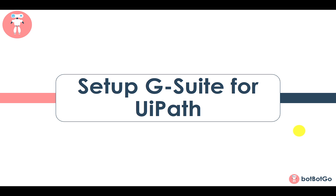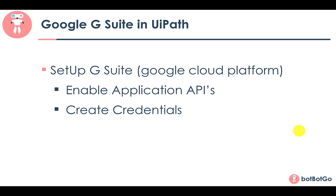In order to configure your application in the Google Cloud Platform, there are basically two steps. You need to first enable the APIs of all the applications that you want to use in UiPath Studio, and thereafter you need to create credentials so that Google can authenticate your application. There are basically three different types of credentials that can be created, and each credential type has a different use case. We'll have a look into each of these things in a few minutes.